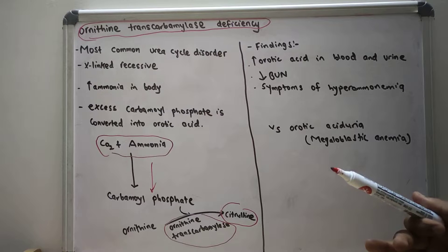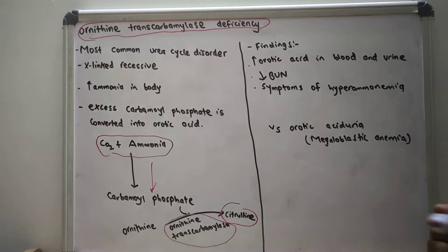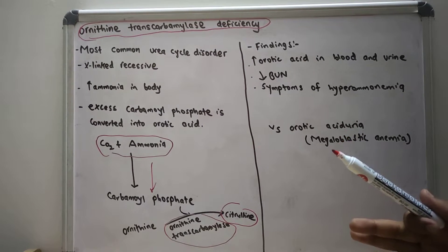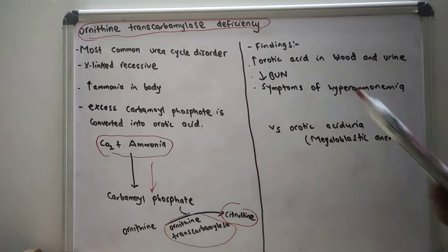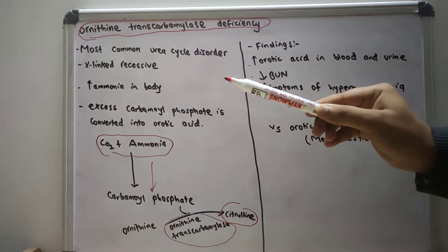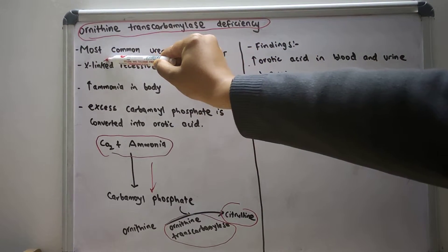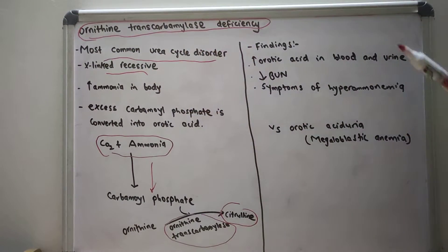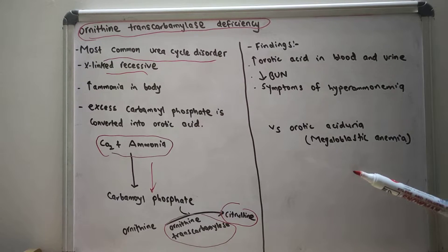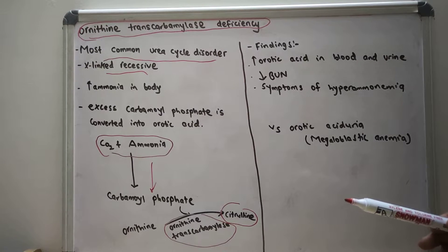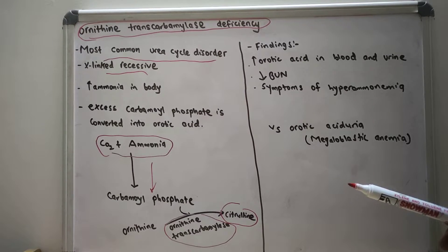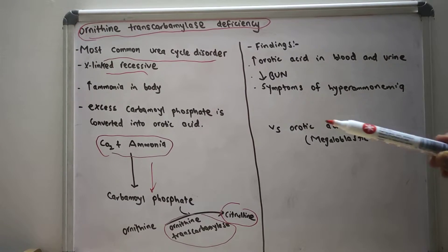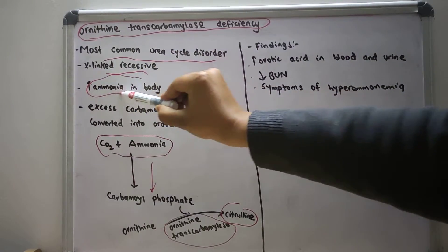From citrulline, the urea cycle continues and ultimately ammonia is converted into urea, which is transported to the kidneys and excreted. Ornithine transcarbamylase deficiency is the most common urea cycle disorder, and it is X-linked recessive — other enzyme deficiencies in the urea cycle are autosomal recessive. This results in increased ammonia in the body.